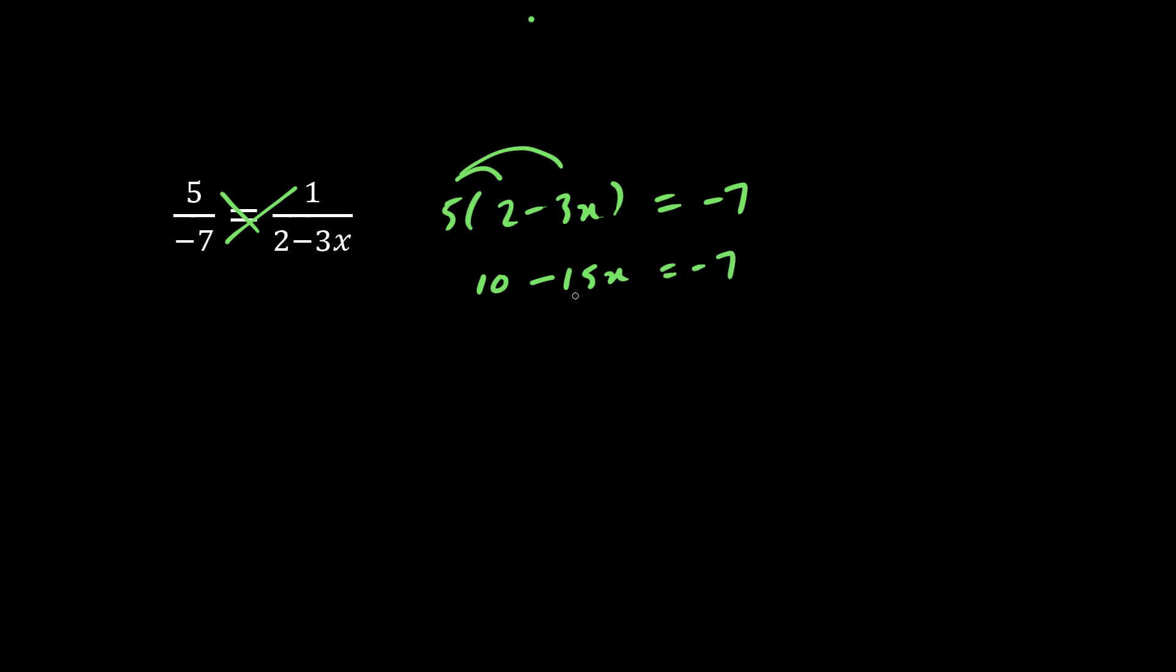And so we want to make the coefficient of x positive, so let's throw this negative 15x to the right. So we have positive 15x, and we're going to throw this negative 7 term to the left, which makes it positive 7. The sign changes when you throw it over the equal sign.